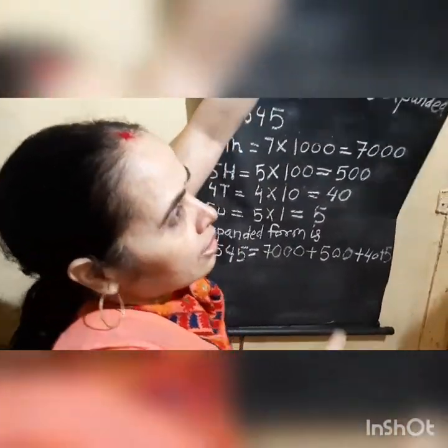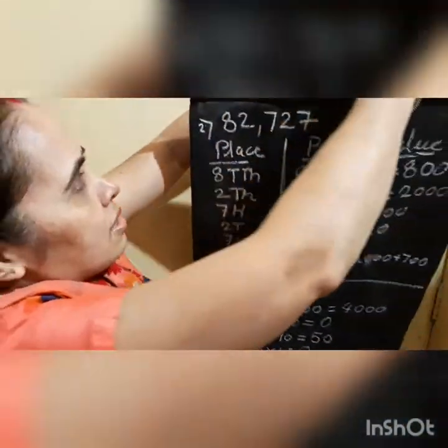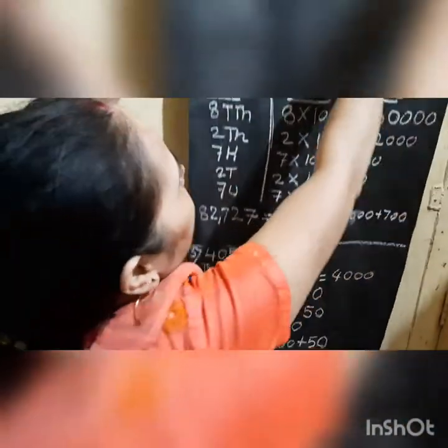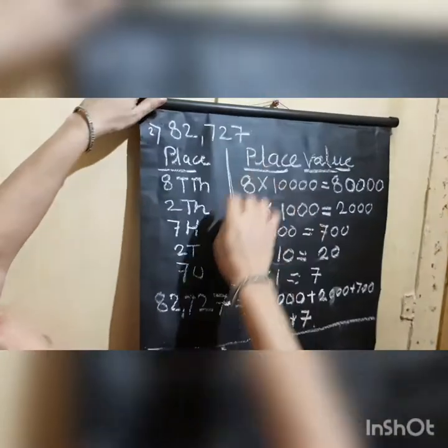So the expanded form is: 7,000 plus 500 plus 40 plus 5. Is it clear, children? We will see one more example.